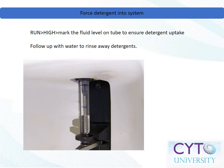If a back flush procedure doesn't unclog the instrument, it may be necessary to force detergents or other cleaners into the system. Always use detergents or cleaners that are compatible with your instrument. Install a tube filled with cleaning solution on the sample injection port and mark the fluid level on the tube. Run the instrument at maximum sample injection rate for several minutes and observe if the liquid has moved from its original line.